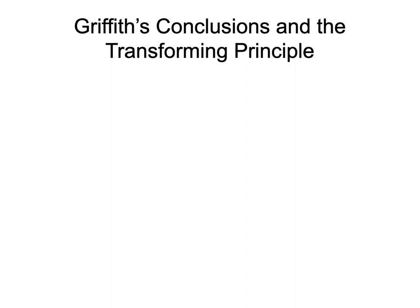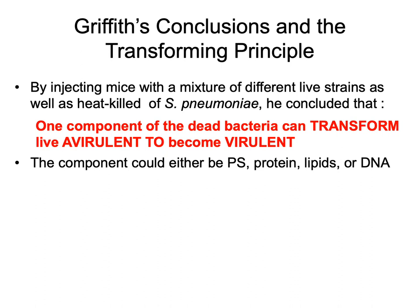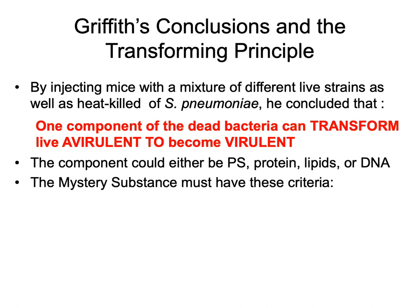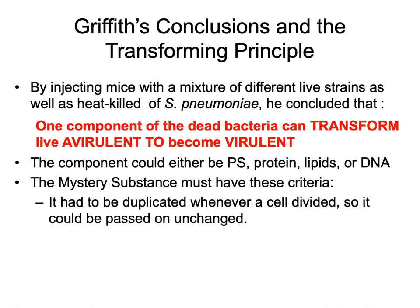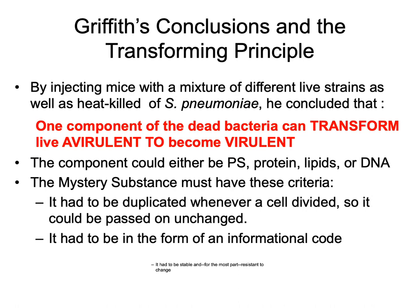So what can be concluded from Griffith's experiment? Based on the third experiment, Griffith thought that one component of the dead bacteria could transform live avirulent R to become virulent. The component could either be polysaccharide, protein, lipids, or DNA — he didn't know yet. In addition, Griffith postulated that the mystery substance must have three criteria: first, it had to be duplicated so it could be passed on; second, it had to be in the form of an informational code; and third, it had to be stable and resistant to change.